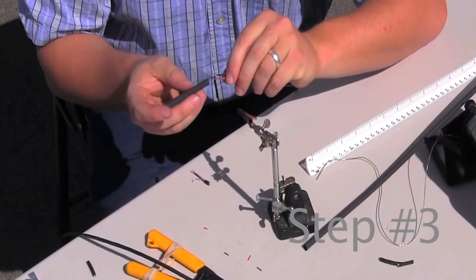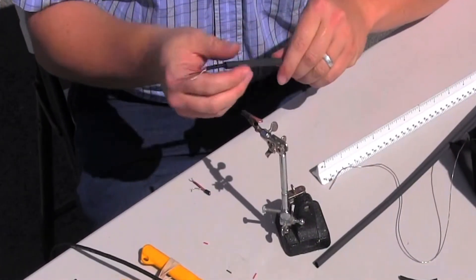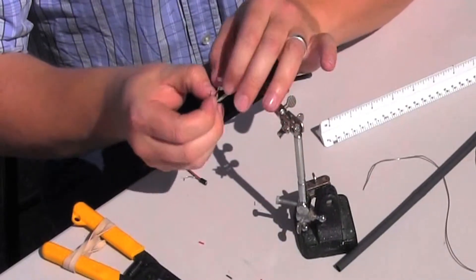Step three: slide the outer heat shrink onto one of the cables to the side of the splice. Be sure to slide it far enough onto the cable away from the joint so the heat gun will not heat it up before you're finished with the next steps.